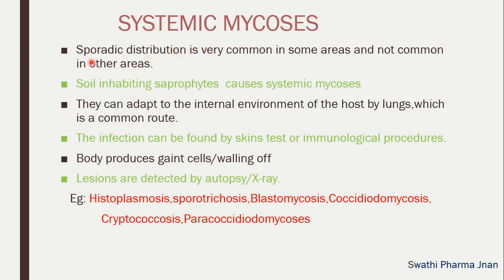Now we will see in detail about systemic mycosis. Sporadic distribution is very common in some areas and not common in other areas. This systemic mycosis will be caused by soil-inhabiting saprophytes. They can adapt to the internal environment of the host — lungs is the common route of entry for the fungal infection. The infection can be found by skin test or immunological procedure. Lesions are detected by autopsy and X-ray.